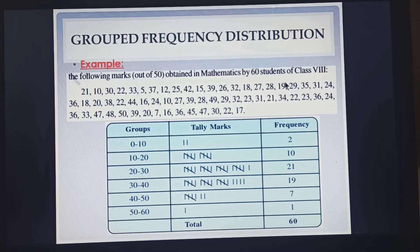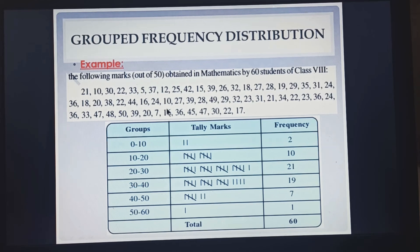Similarly if we take the number 19 — 19 comes between 10 and 20, so you will mark the tally of 19 in the group of 10 to 20. If you take the number 48, it comes between 40 and 50, so you will mark one tally of 48 in the group of 40 to 50. Similarly you have to make the entry for all the given data. We have formed small groups of the given data, and this kind of arrangement or representation is called group frequency distribution.